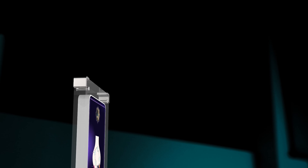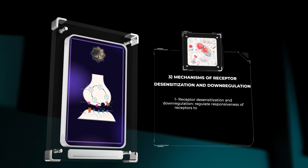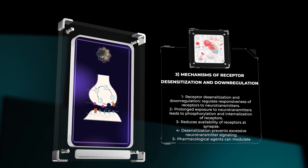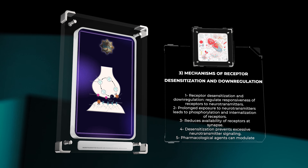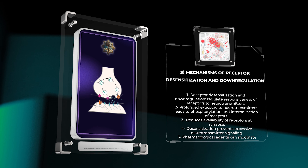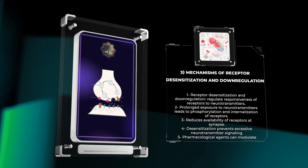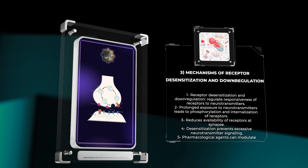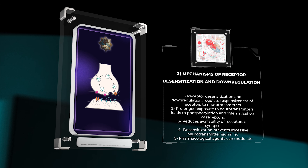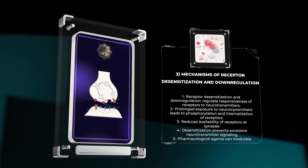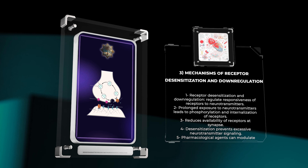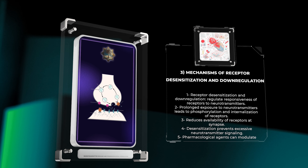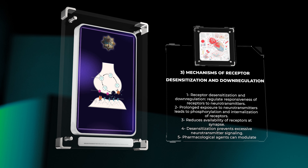Receptor desensitization and downregulation are fundamental processes that regulate the responsiveness of receptors to neurotransmitters. Prolonged exposure to neurotransmitters leads to the phosphorylation and internalization of receptors, reducing their availability at the synapse. This phenomenon, known as desensitization, prevents excessive neurotransmitter signaling. Pharmacological agents that modulate the desensitization and downregulation of receptors can have a significant impact on neurotransmitter release and receptor-mediated signaling.